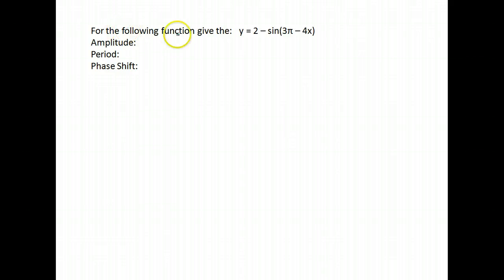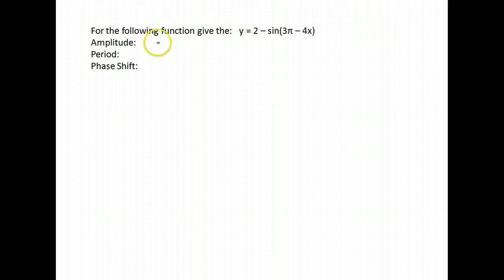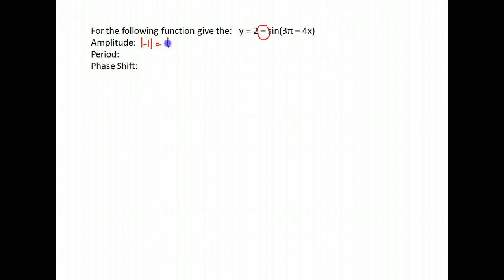Find each of those for 2 minus sine(3π minus 4x). This is getting more complex. For the amplitude, we just focus on what's directly in front of sine — what's multiplied by it. Here we have just a negative, which would be negative 1. Taking the absolute value of that, our amplitude comes out to be positive 1.